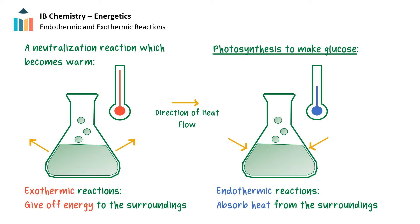On the other hand, some reactions and processes require energy to occur. An example of this is photosynthesis, which uses the energy from sunlight to produce glucose. We call reactions and processes that give off energy to the surroundings in the form of heat exothermic, and those that absorb energy from the surroundings in the form of heat endothermic.